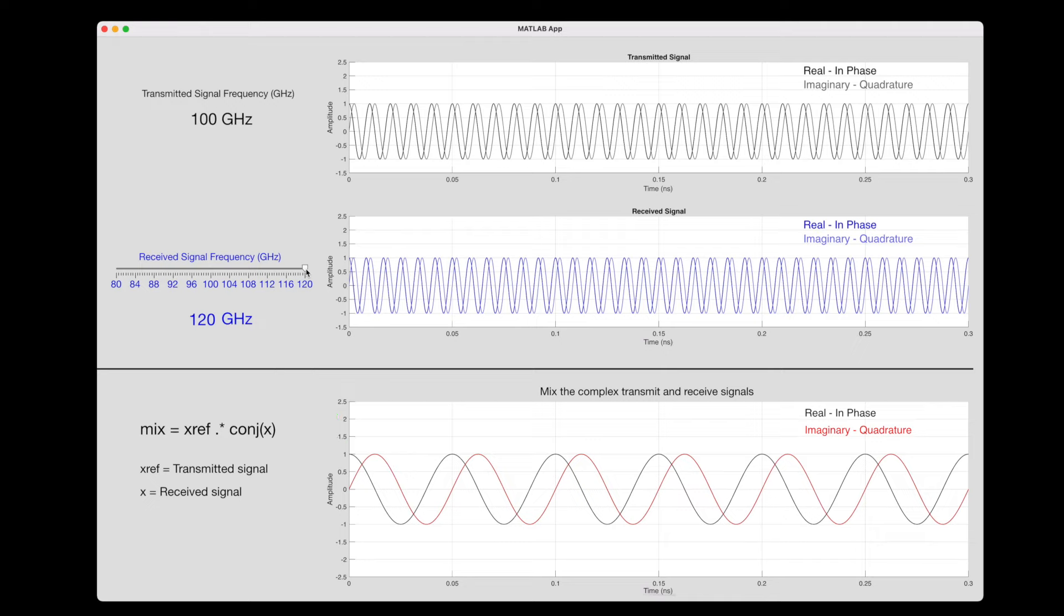That's pretty awesome on its own that we can get velocity from a continuous signal. But with autonomous vehicles, we want to measure range as well as velocity. And to do that, we need frequency modulation.